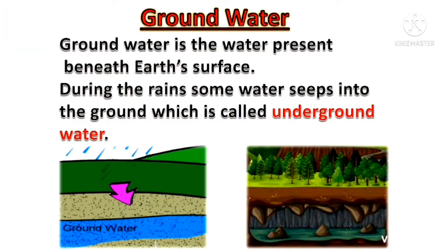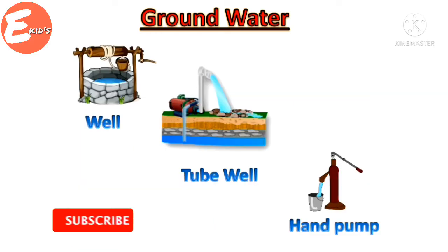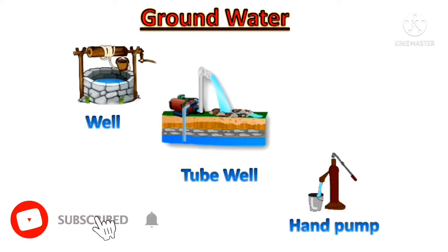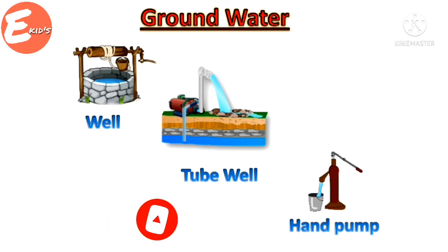Ground water is the water present beneath the earth's surface. During the rains, some water seeps into the ground, which is called underground water. Some examples of ground water are well, tube well, and hand pump.